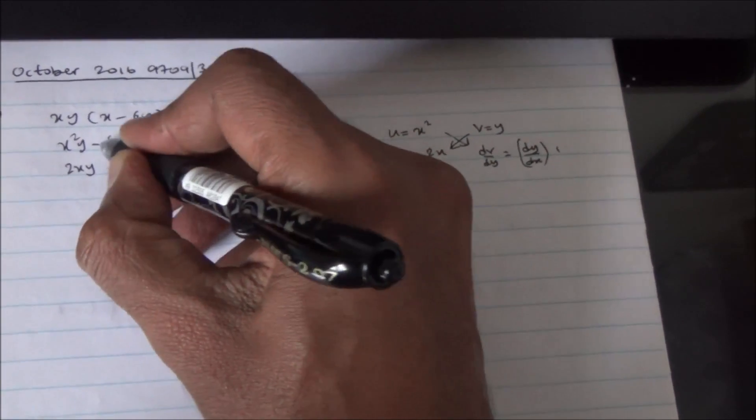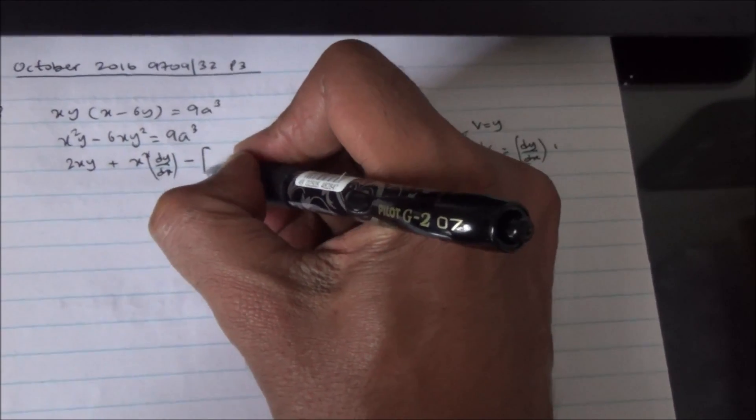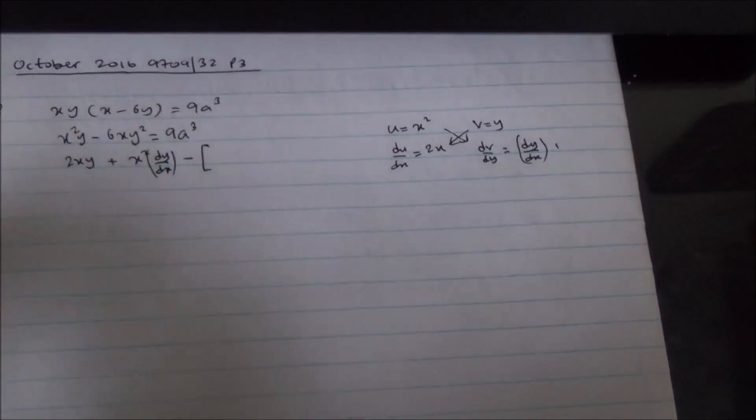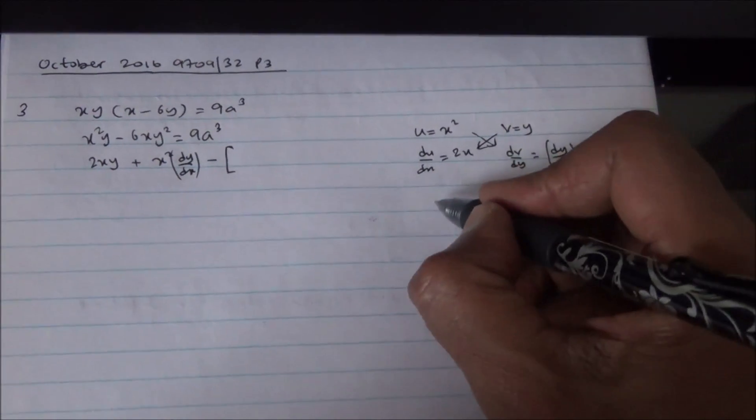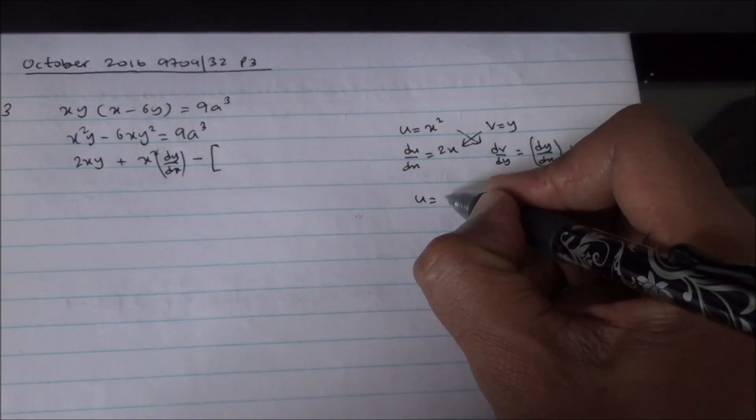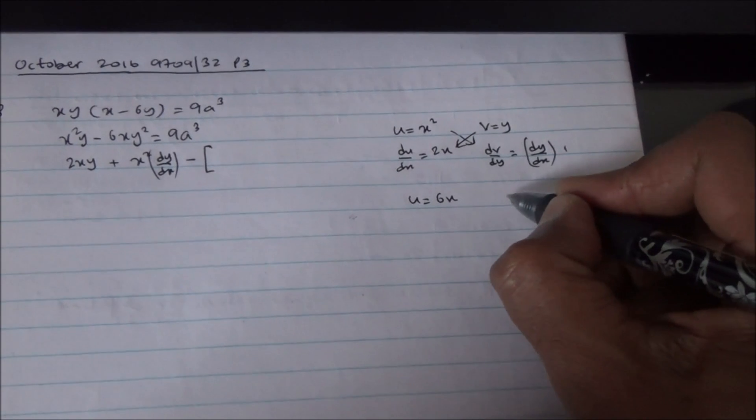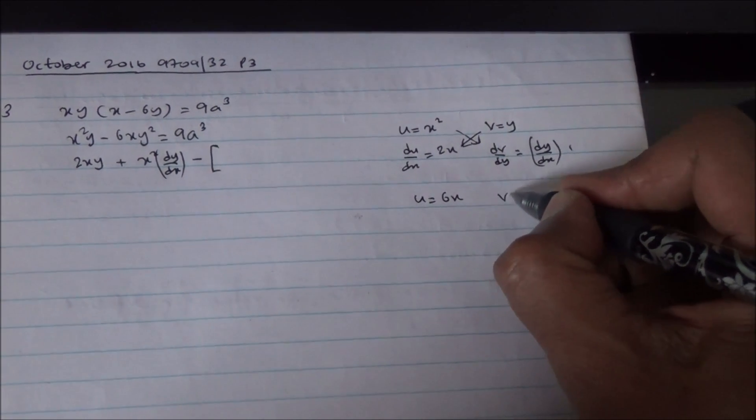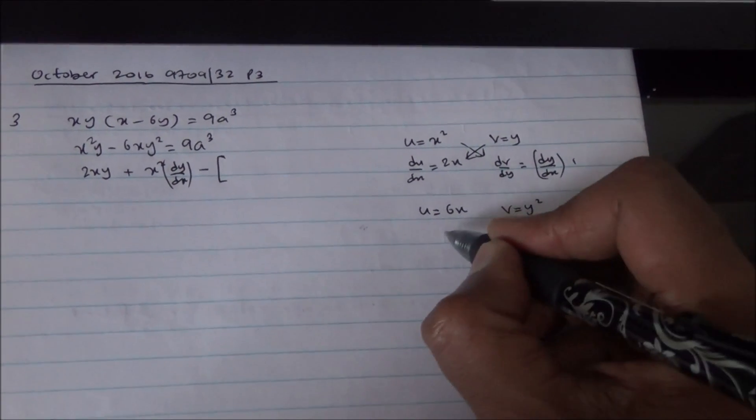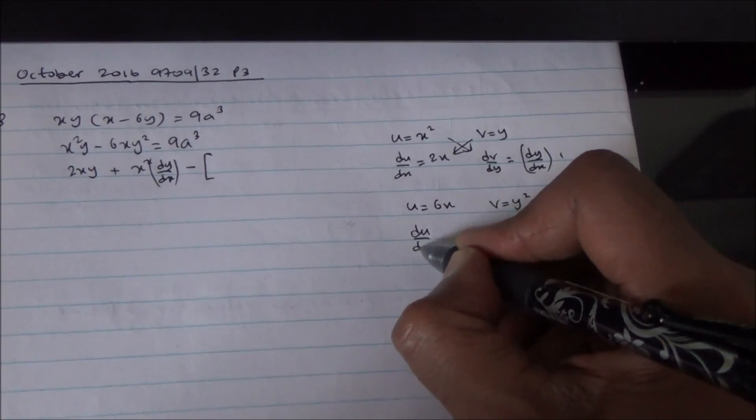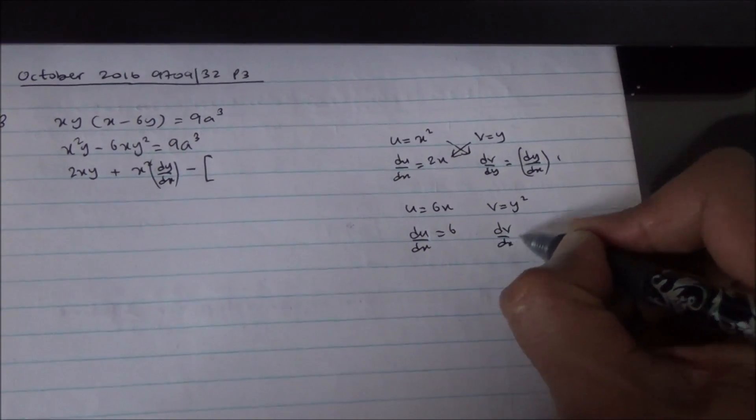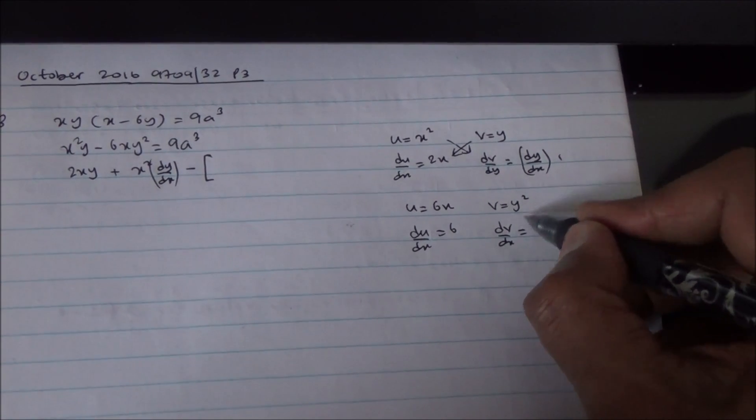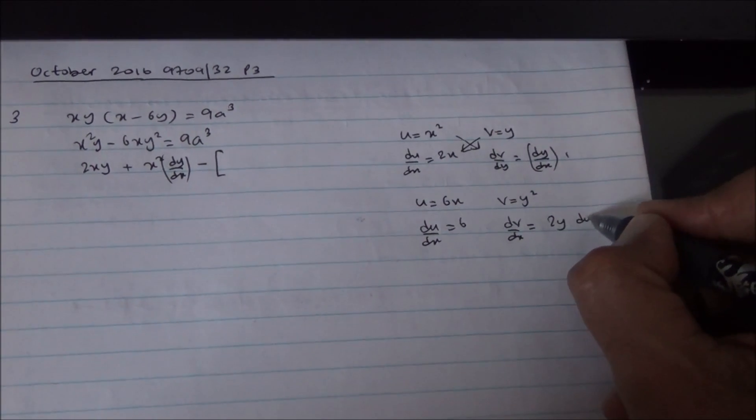Minus, in brackets, we're going to get 6x as the variable u, and then v is going to equal to y squared. So, du by dx is equal to 6, and dv by dx is going to equal to 2y dy by dx.